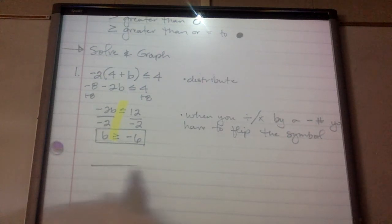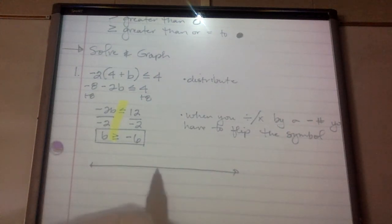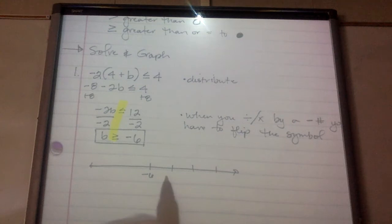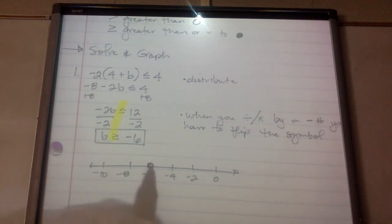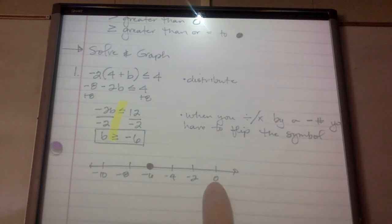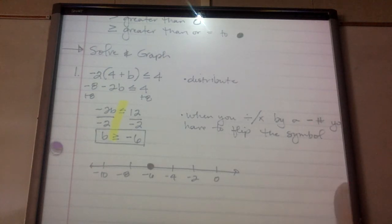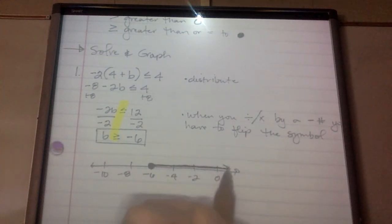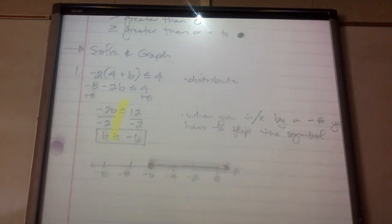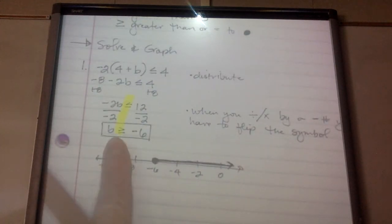My answer is B is greater than or equal to negative 6. I'm going to draw a number line, putting negative 6 here and going by 2's — negative 8 and negative 10 to the left. Because it's equal to, I should have a closed circle on negative 6. Then I'm going to point to the side that has numbers greater than negative 6 — 0, 2, 4, 6, 8 — so I draw a dark line pointing in that direction.